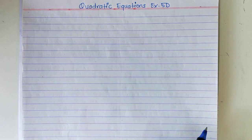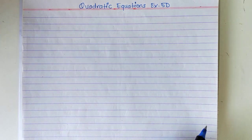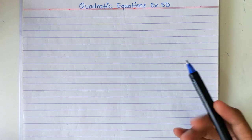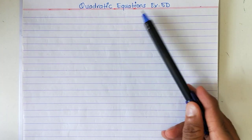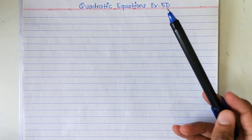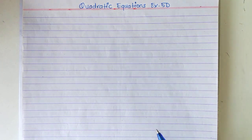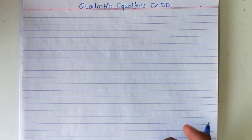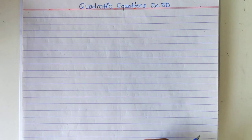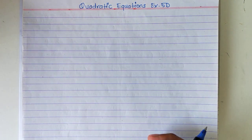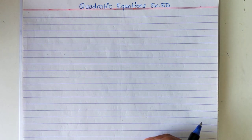Hello students, we had started exercise 5b, quadratic equation exercise 5d and we completed question number 1. I did 4-5 sums from there. The remaining sums I told you, you have to do by using the formula.